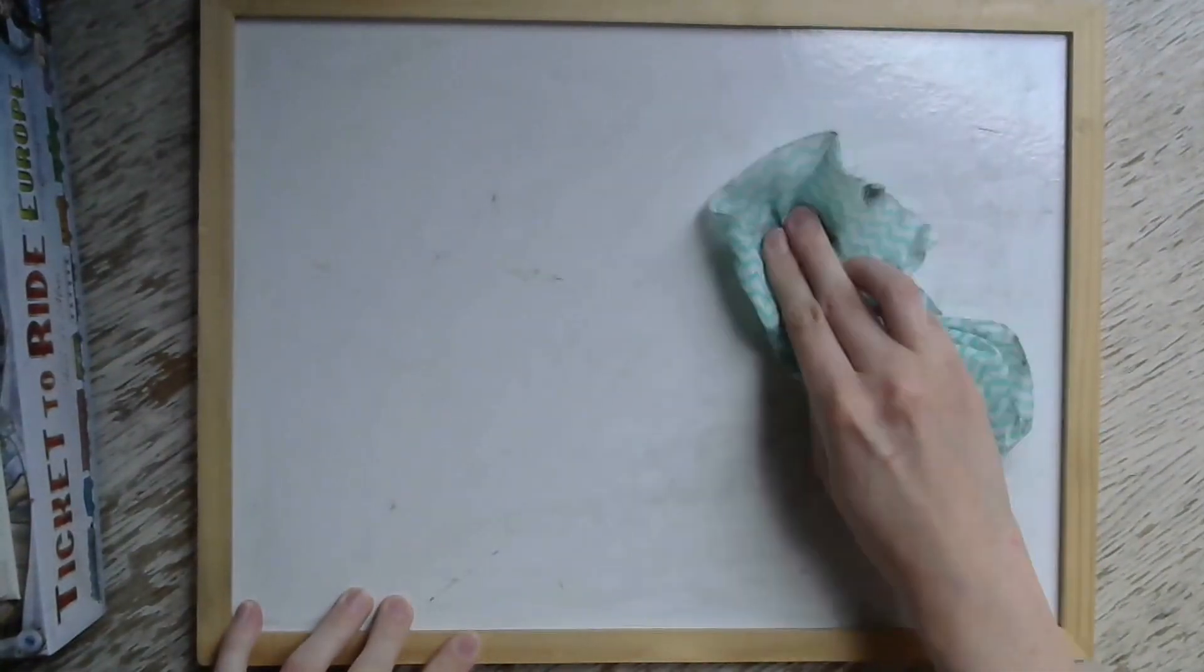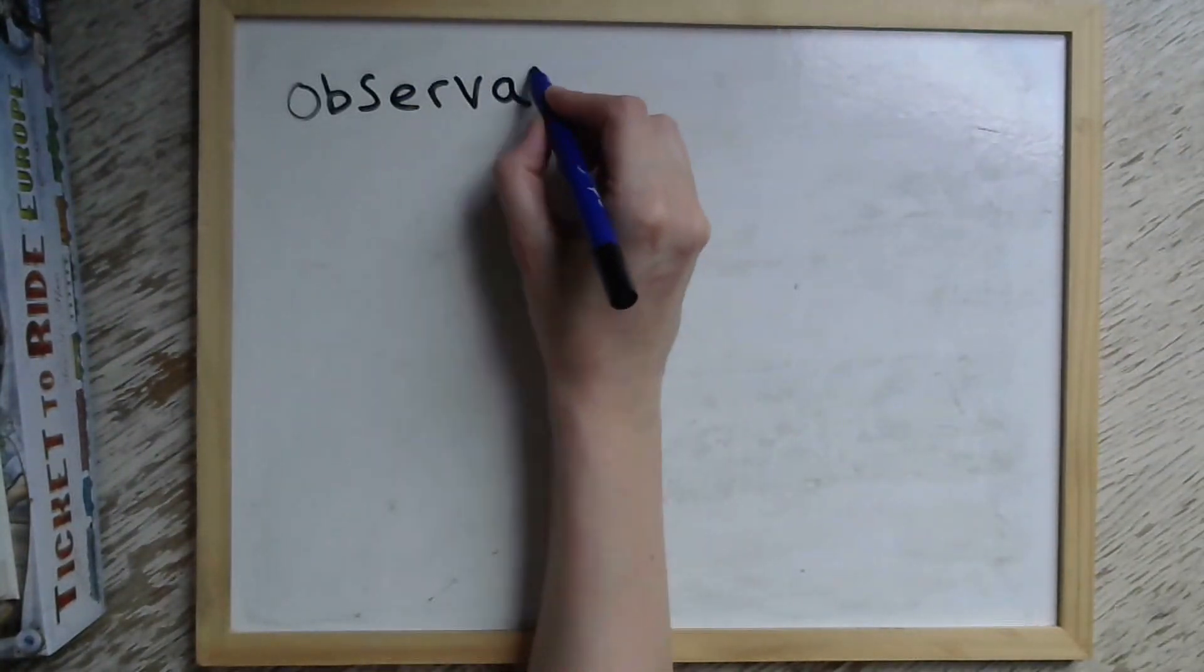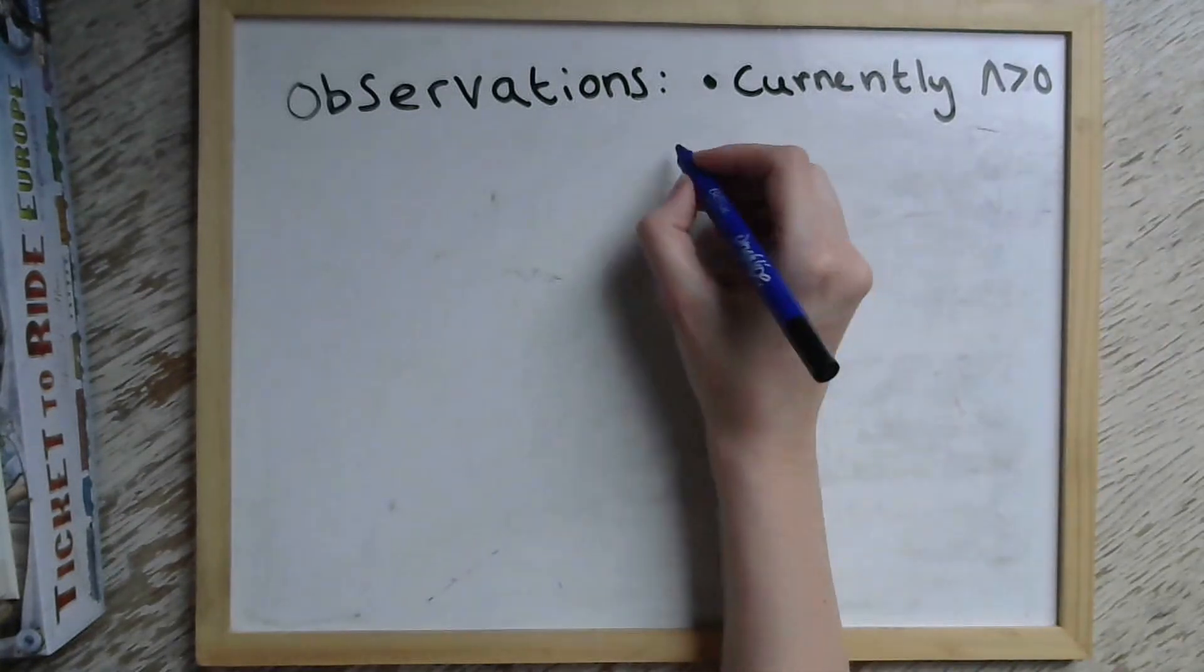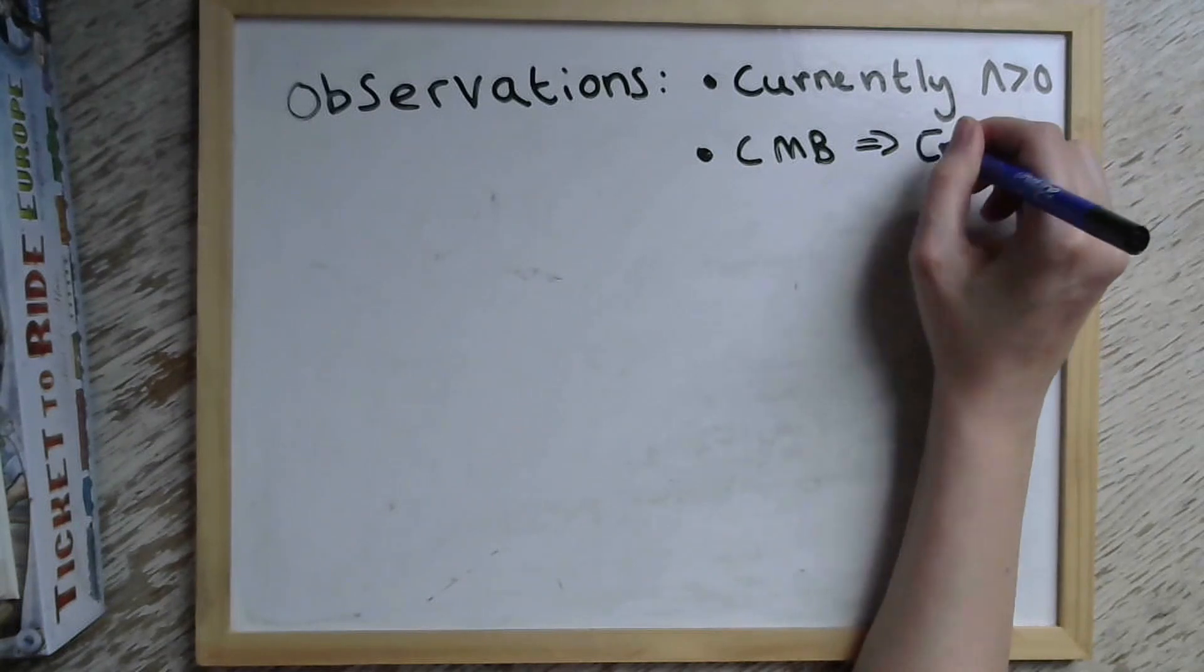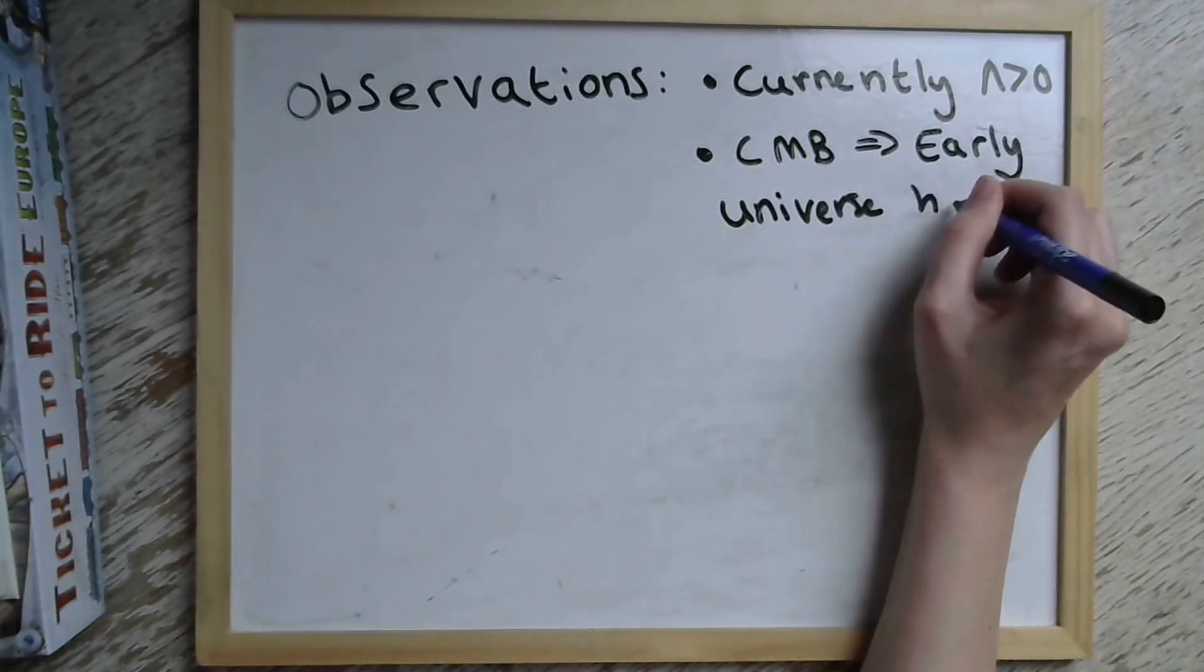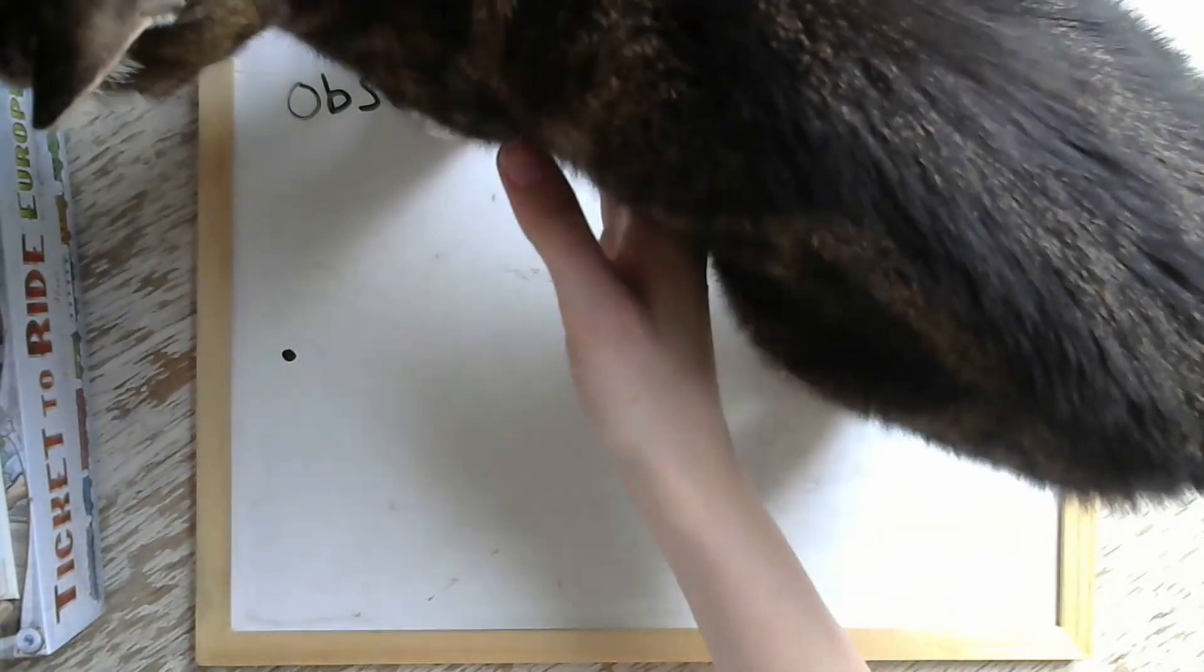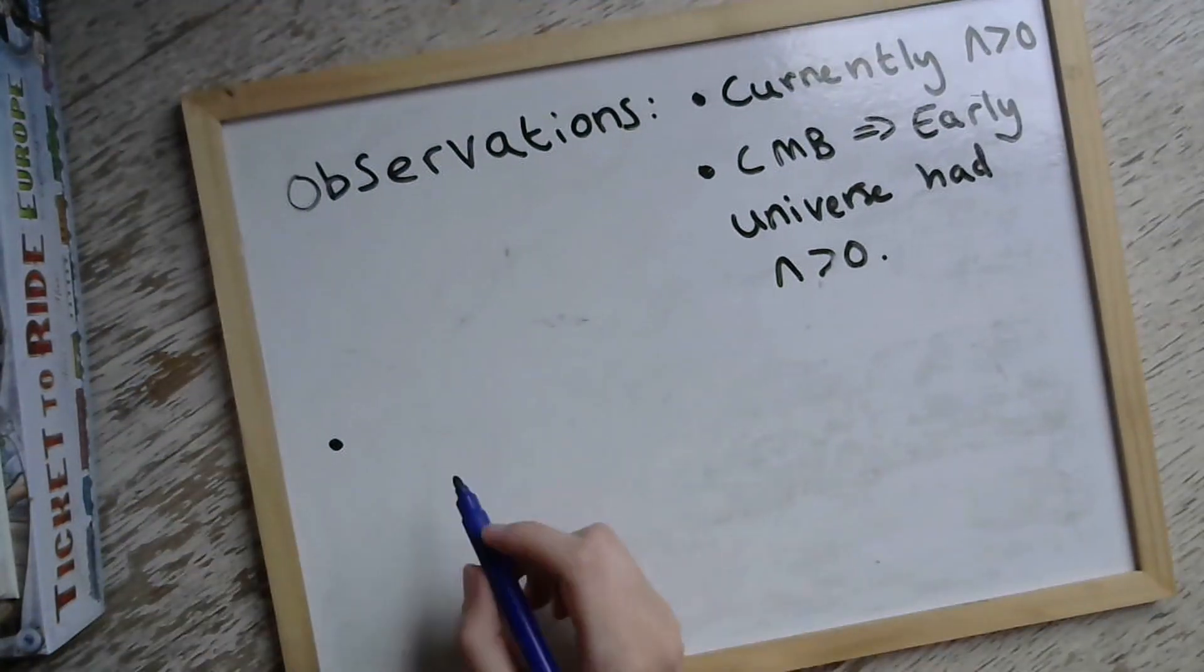There are many motivations for studying de Sitter. Some of these stem from observations that have been made in the last 20 years. For example, measurements of supernovae have shown that the current value of the cosmological constant in our universe is small but positive. We've also seen from observations of the CMB that the early universe was dominated to first approximation by a positive cosmological constant.